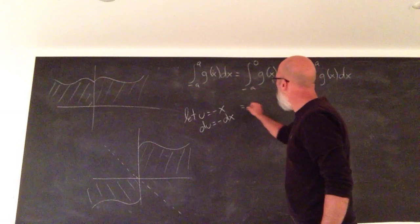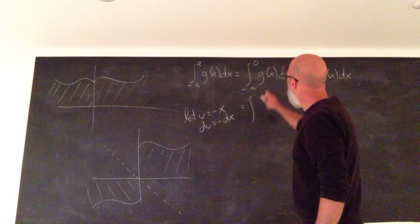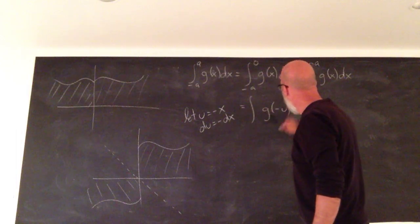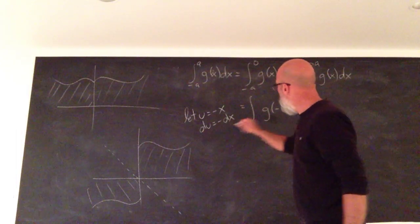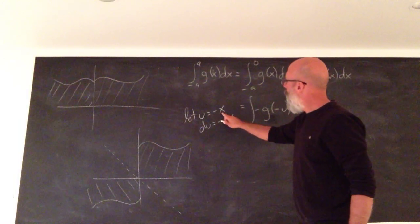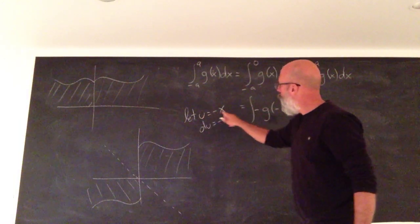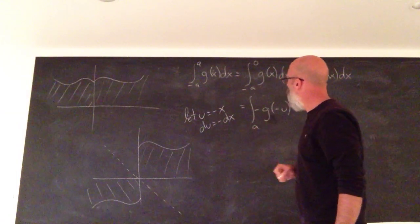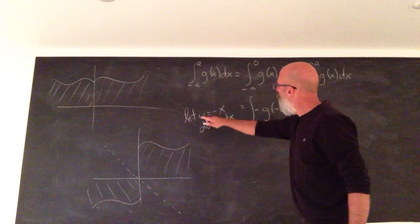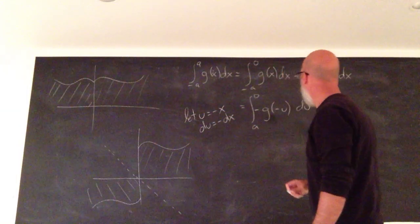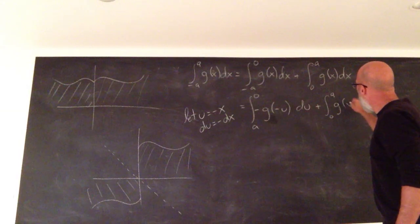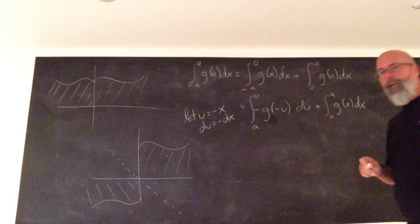And so this integral is what? X is negative U, so this is G of negative U. dX is negative dU. When X is negative A, U is A. And when X is 0, U is 0. The second integral remains as is.